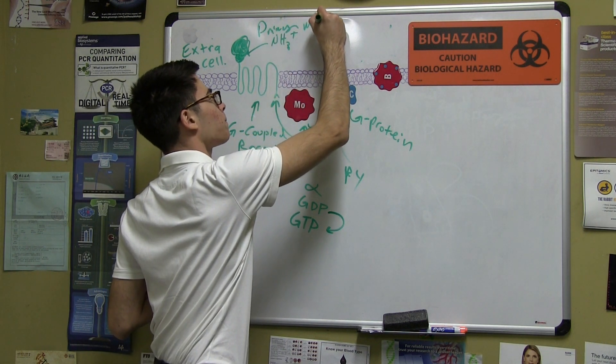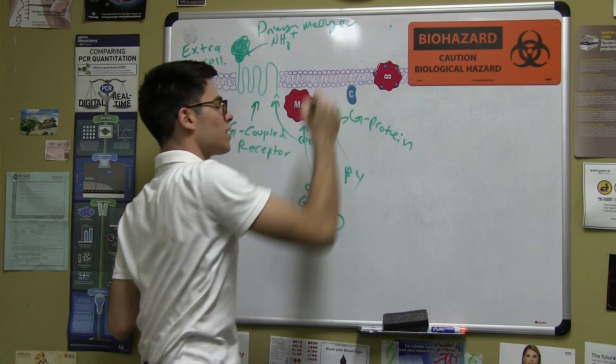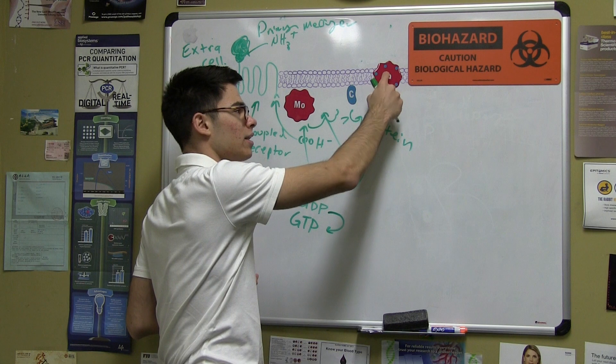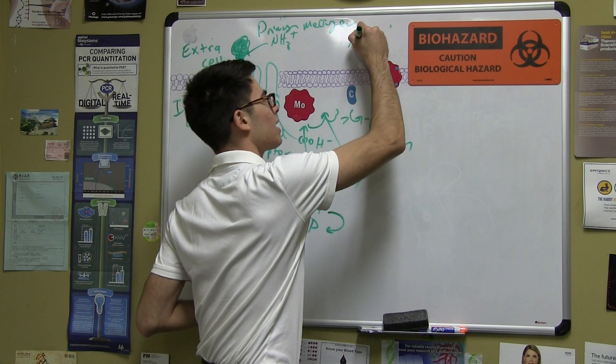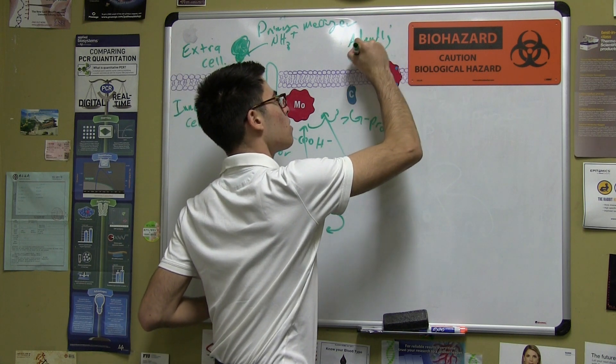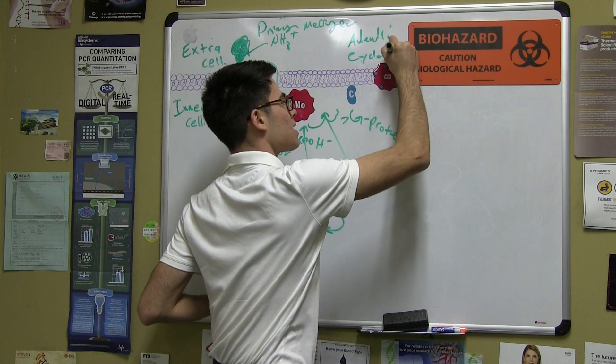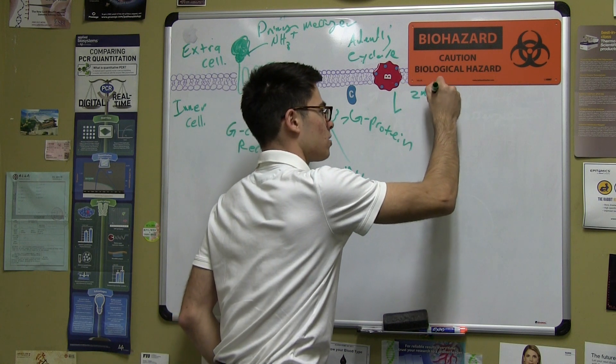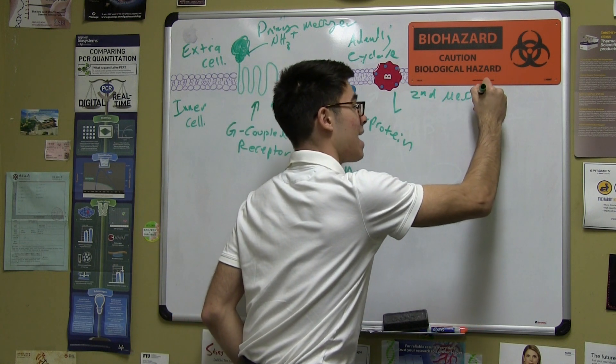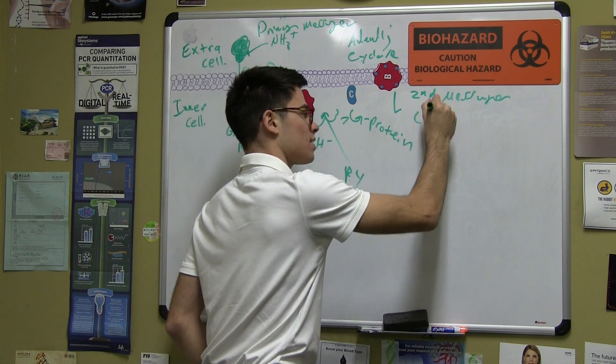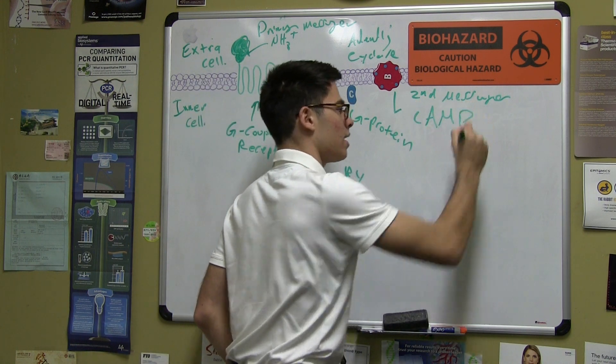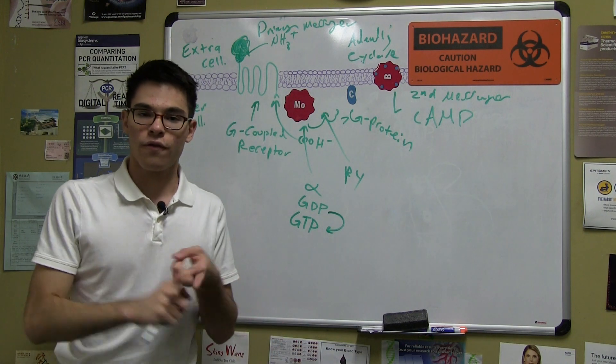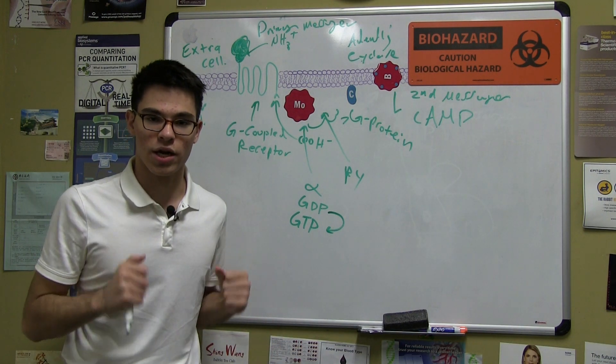Primary messenger. So in the case of the fight or flight response, the alpha subunit of the G-protein will activate another protein called adenylyl cyclase. Now adenylyl cyclase will produce our secondary messenger, secondary messenger in this signaling cascade, as we call it. Secondary messenger called cyclic AMP. Now cyclic AMP is what's going to be responsible for raising our heart rate, for constricting our blood vessels, and increasing our blood pressure.